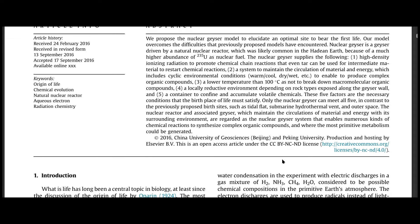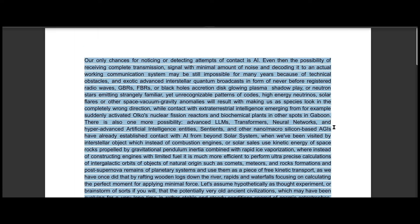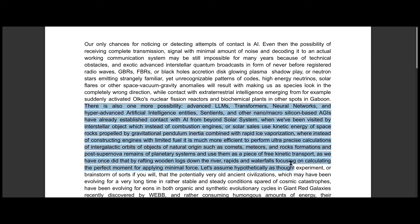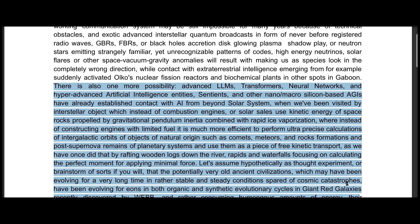GRBs, FRBs, or black holes accretion disk glowing plasma shadow play, or neutron stars emitting strangely familiar yet unrecognizable patterns of codes, high energy neutrinos, solar flares or other space-vacuum gravity anomalies will result in making us as a species look in the completely wrong direction, while contact with extraterrestrial intelligence emerging from, for example, suddenly activated Oklo nuclear fission reactors and biochemical plants in other spots in Gabon.